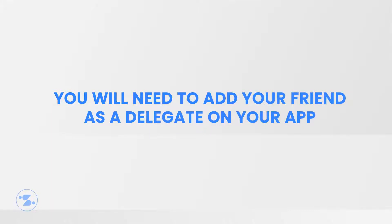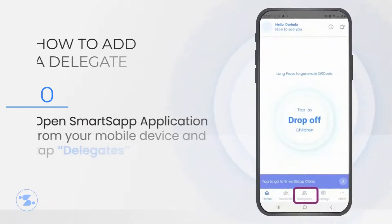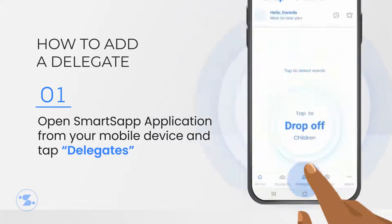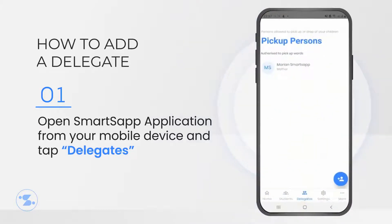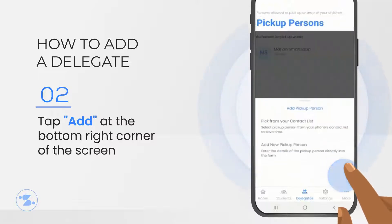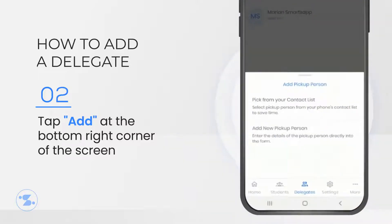To add a delegate, open the SmartsApp app and tap Delegates at the bottom of the screen. Tap the icon at the bottom right side of the screen to add a new delegate.